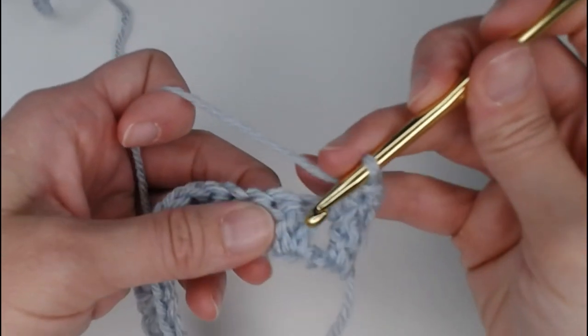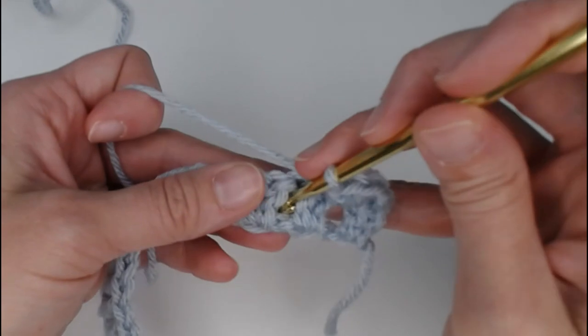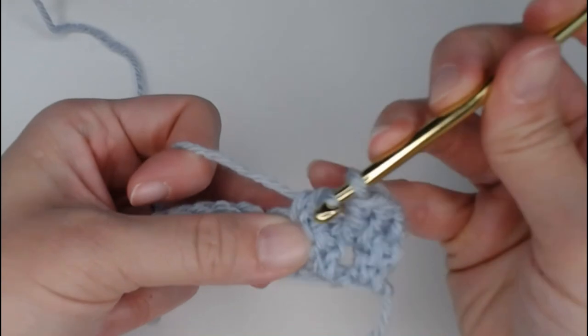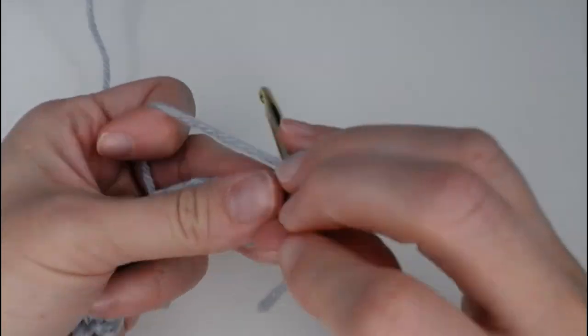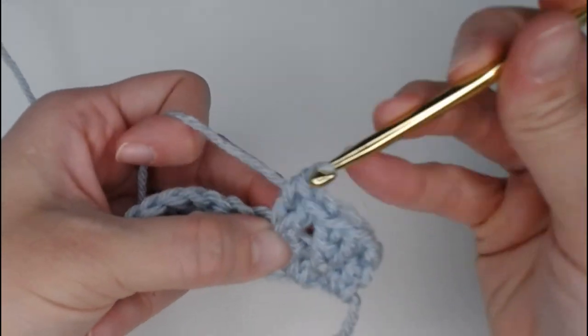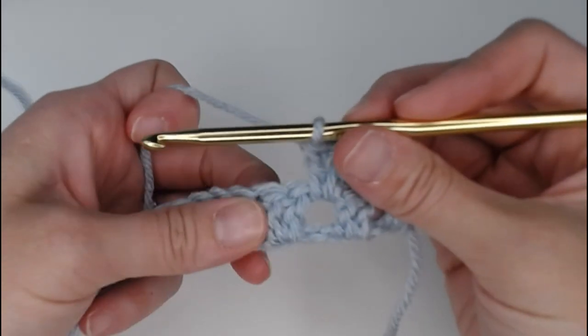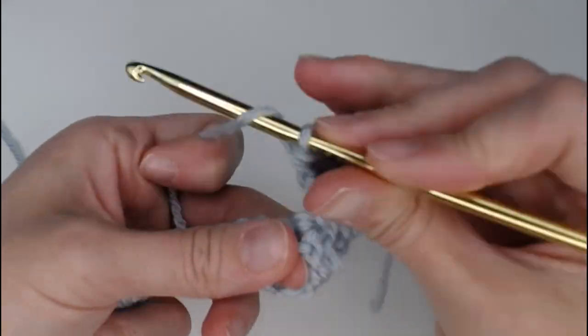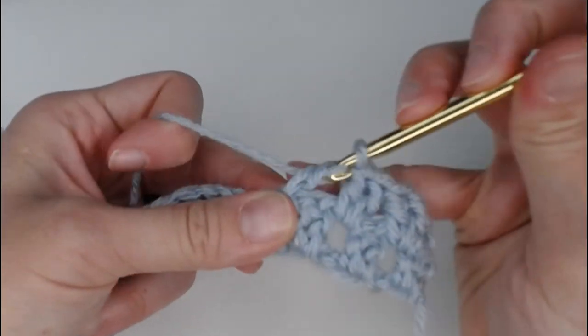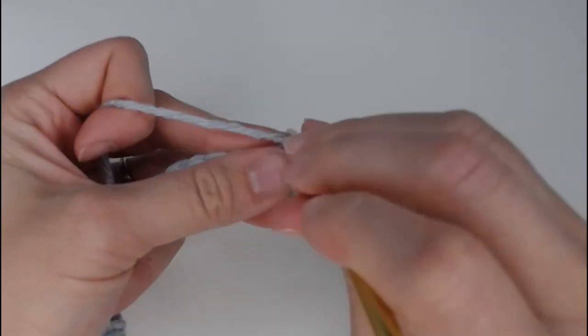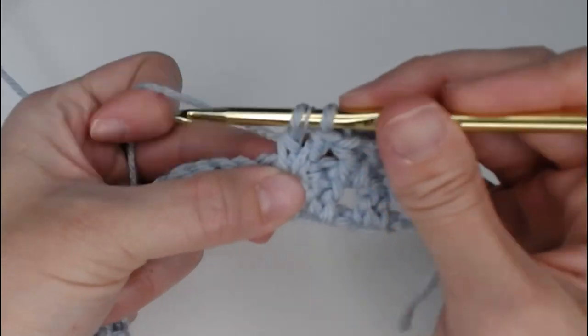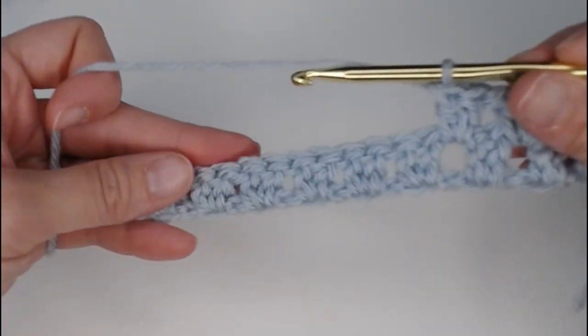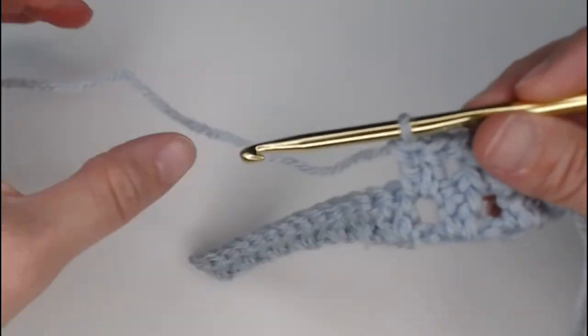Alright, skip the 2 double crochets, find the space in between, and put 2 double crochets. 1, 2, and repeat that all the way across, and I will meet you at the end.